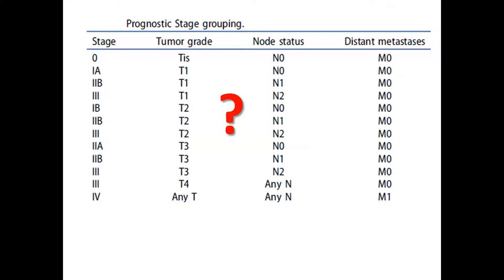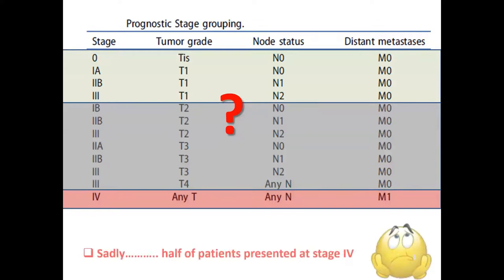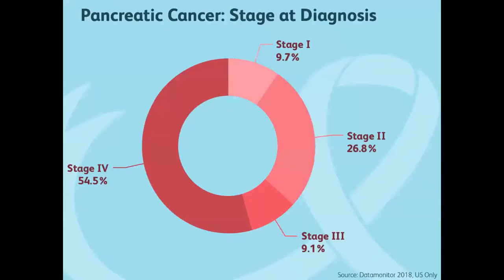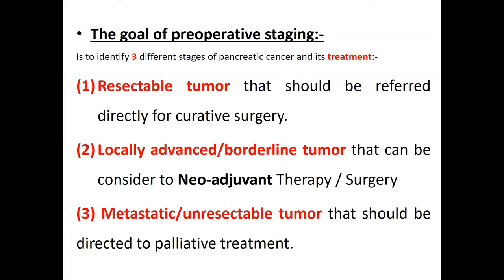According to this staging, we stage the tumor as either stage one, two, three, or four. Unfortunately, half of patients present at stage four, which is distant metastasis, putting the patient in a position of unresectable disease. After staging, we place the patient into either resectable, locally advanced, or borderline resectability — considered for neoadjuvant therapy or surgery — or metastatic distant metastasis, which is unresectable and only for palliative treatment.